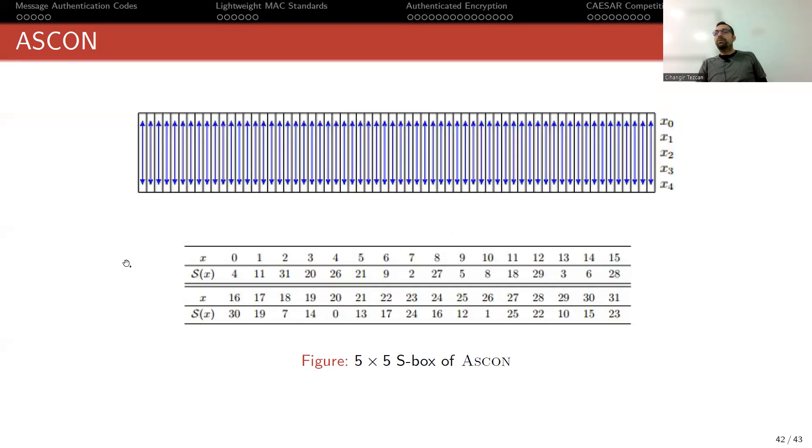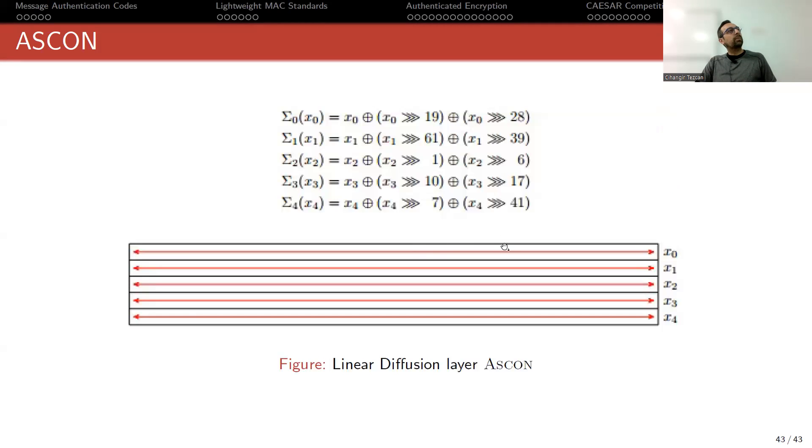Then you perform an S-box operation. So this is a 5x5 S-box since we have five rows. You perform this S-box operation to every column, so 64 times in parallel. This is why it starts from 0 to 31, because 2 to the 5 is 32. So this is a 5x5 S-box operation. Here you provide confusion.